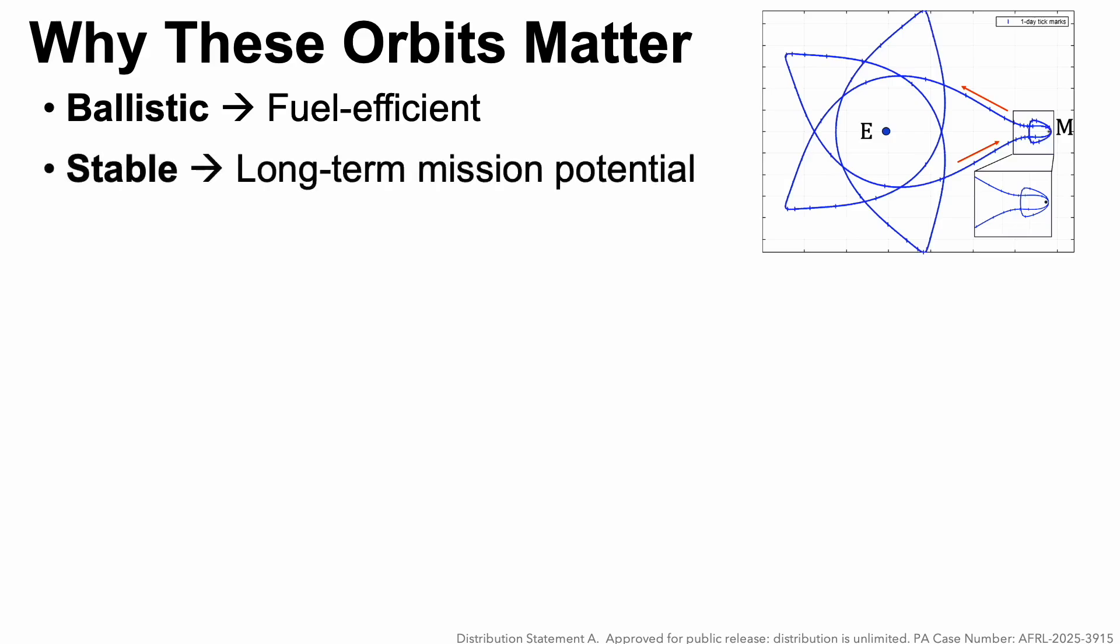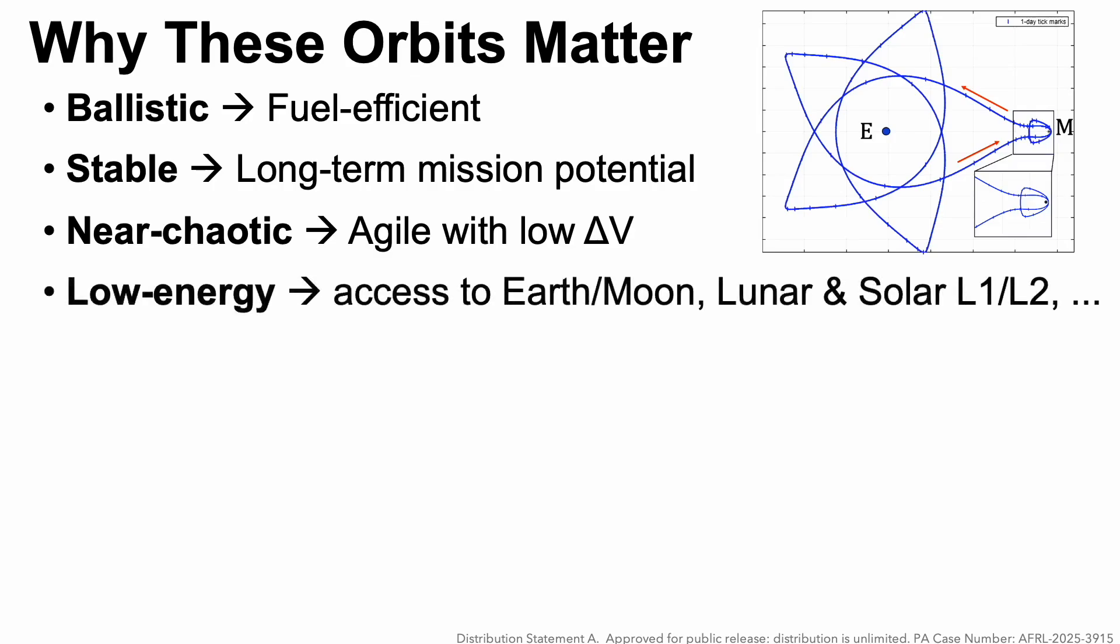They're stable, which could lead to long-term mission potential. Interestingly, they're both stable and near chaotic, connected to many points of interest in the Earth's sphere of influence, so they can be agile with low delta-V. They're in the low energy regime, which means with that low delta-V, you get access to the Earth and the Moon, and both the lunar and solar L1 and L2 and even heliocentric orbits.